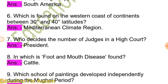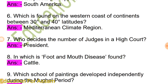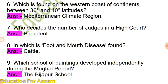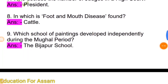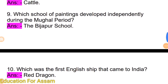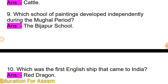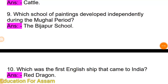Which school of paintings developed independently during the Mughal period? This school of painting is the Bijapur school — also referred to as Mughal color. Which was the first English ship that came to India? The answer is the Red Dragon.